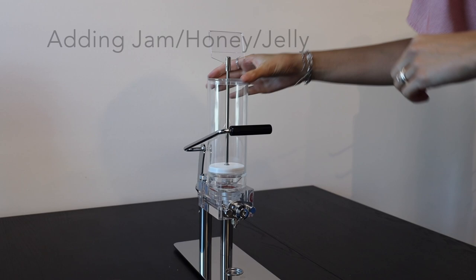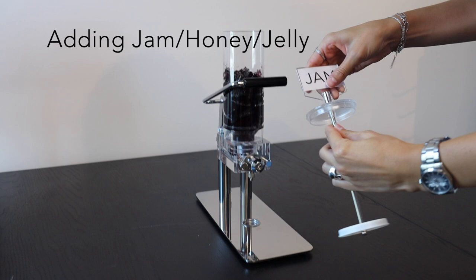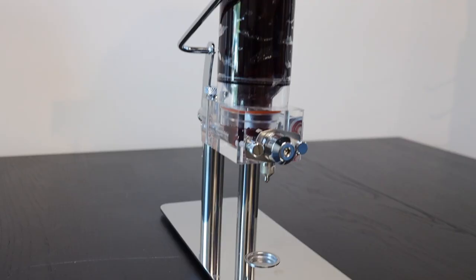Now we move to filling the dispenser. Here we fill the dispenser with jam. Once the dispenser is full, simply place the top back on top of the tube.